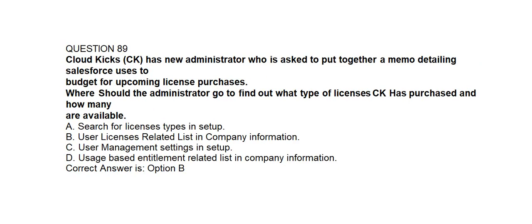Question number eighty-nine. Cloud Kicks has a new administrator who is asked to put together a memo detailing Salesforce users to budget for upcoming license purchases. Where should the administrator go to find out what type of licenses CK has purchased and how many are available? Option A: Search for license type in setup. Option B: Use a license related list in company information. Option C: User management settings in setup. Option D: Users-based entitlement related list in company information. Correct answer is Option B: License related list in company information.